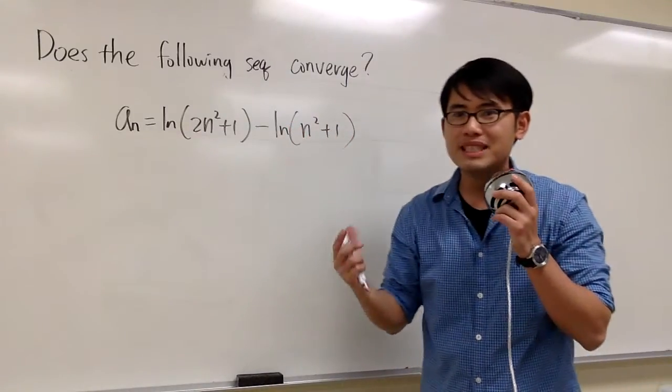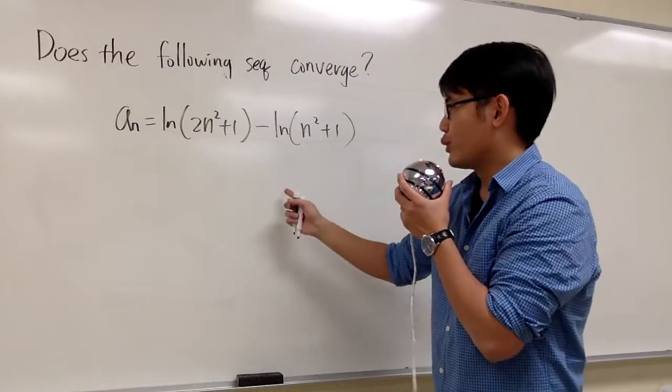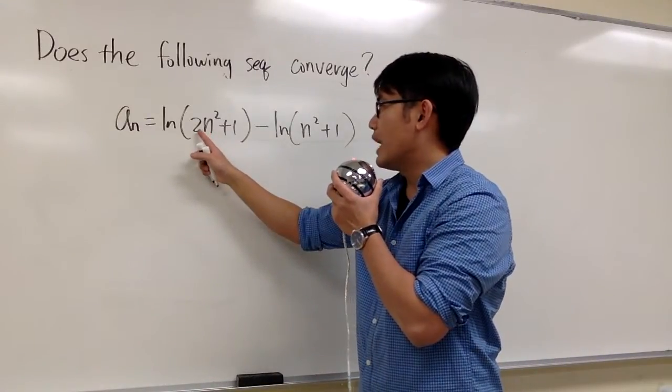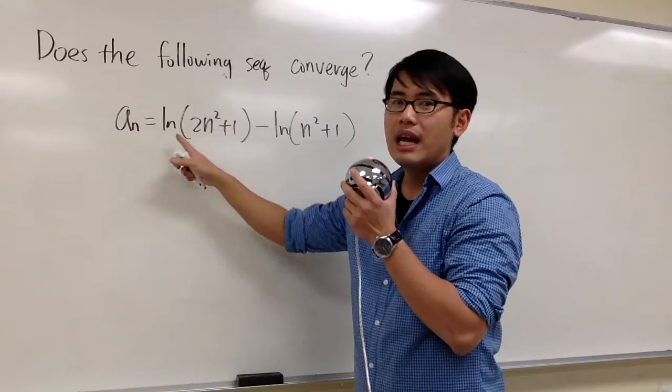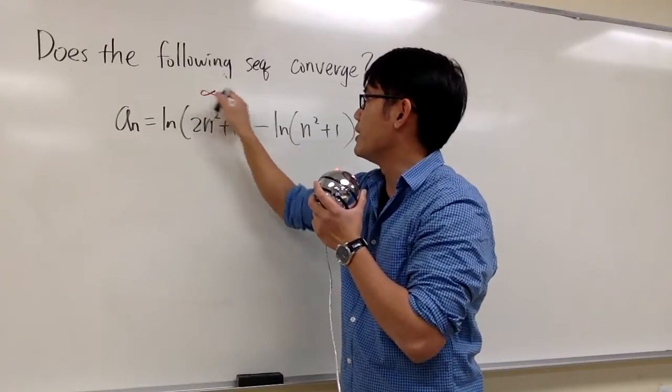So, what happens if n goes to infinity? Let's do a quick check. If n goes to infinity inside, we will have 2 times infinity squared plus 1, which is infinity. ln(infinity), the result of that will be infinity.